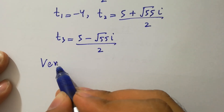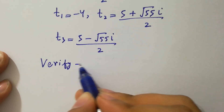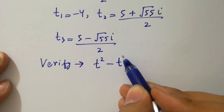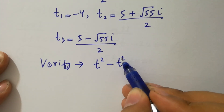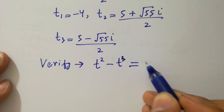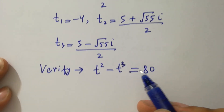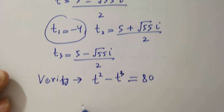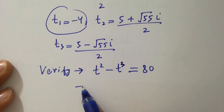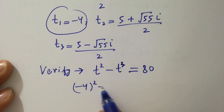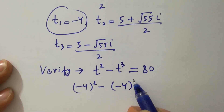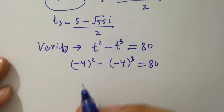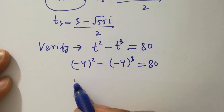In the next step, I am going to verify t squared minus t cubed equal to 80. Put the value of t which is equal to minus 4. We have minus 4 squared minus minus 4 cubed equal to 80.